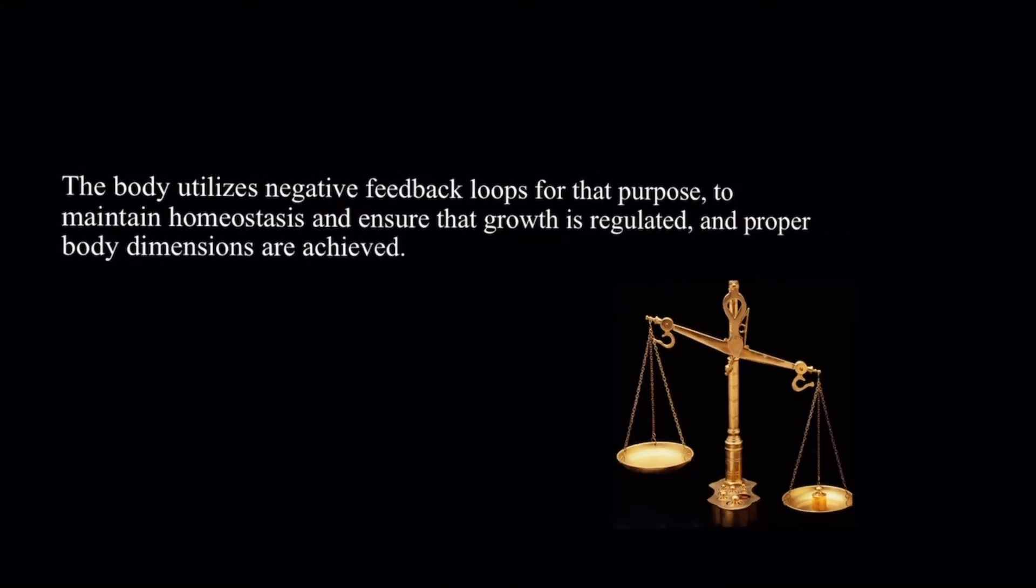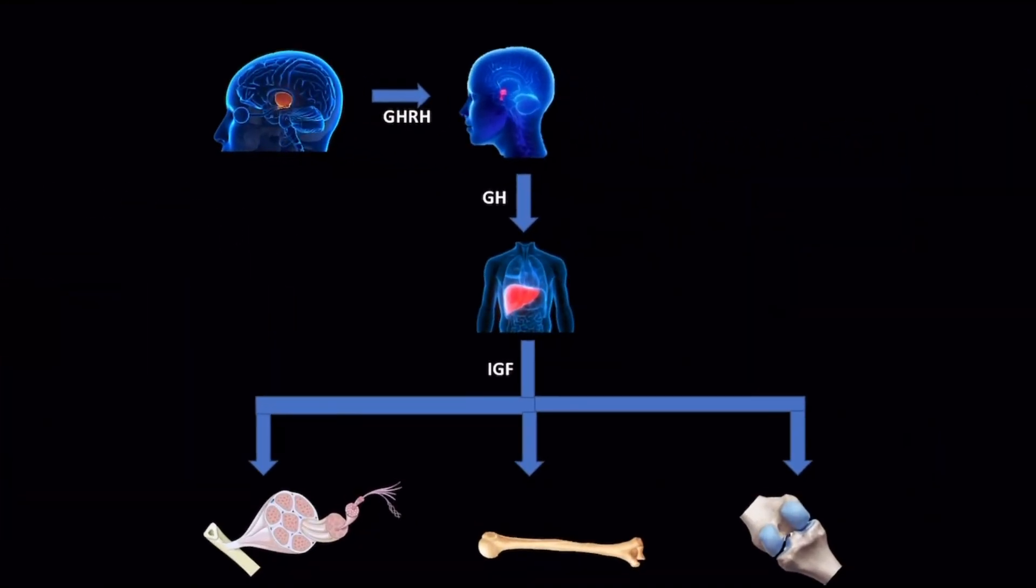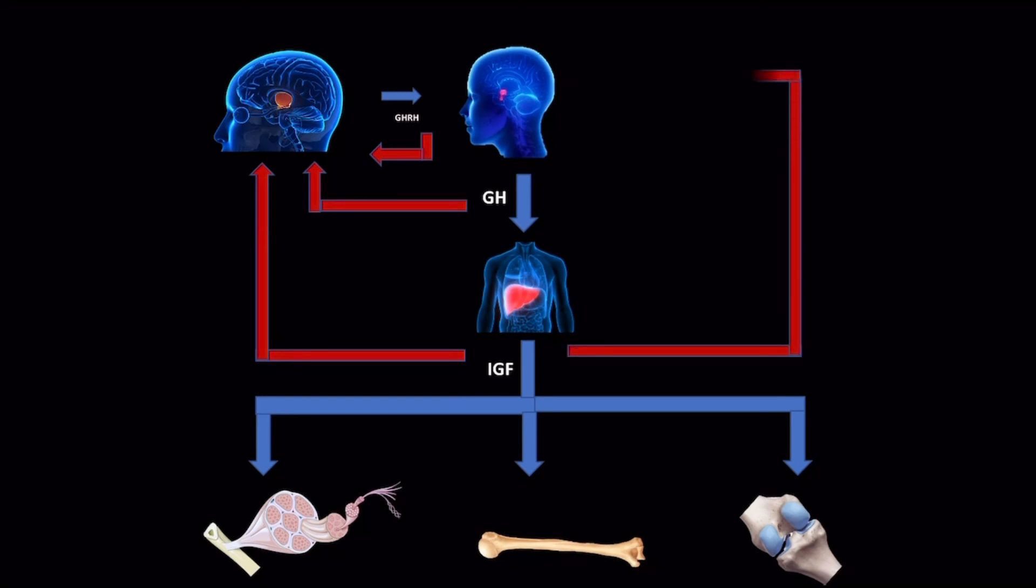As GHRH concentration increases in the blood, it acts on the hypothalamus to decrease its own secretion. GH also takes part in a negative feedback loop, signaling the hypothalamus to decrease the release of GHRH. Likewise, IGF acts negatively on the hypothalamus as well as the anterior pituitary gland to decrease the secretion of GHRH and GH, respectively.